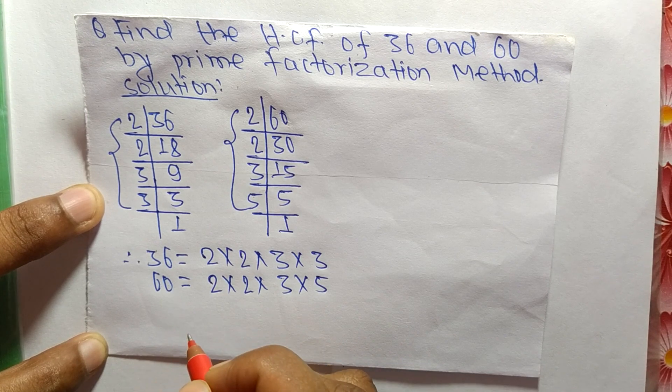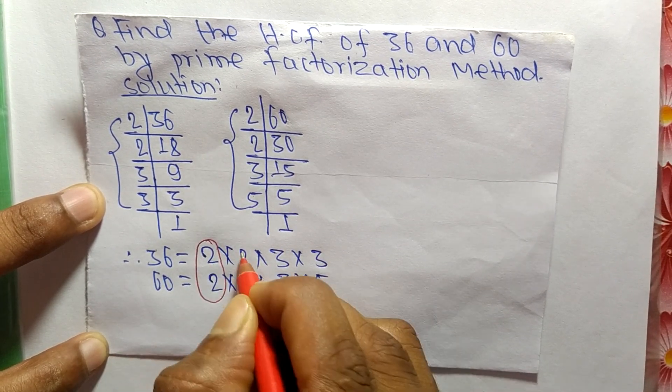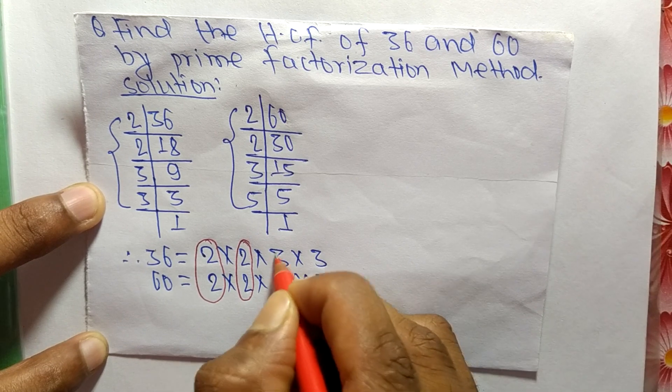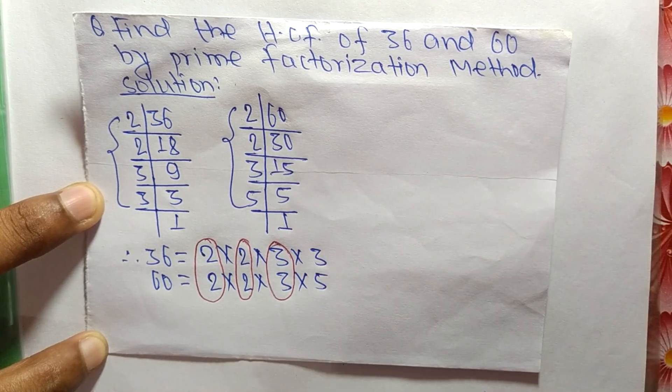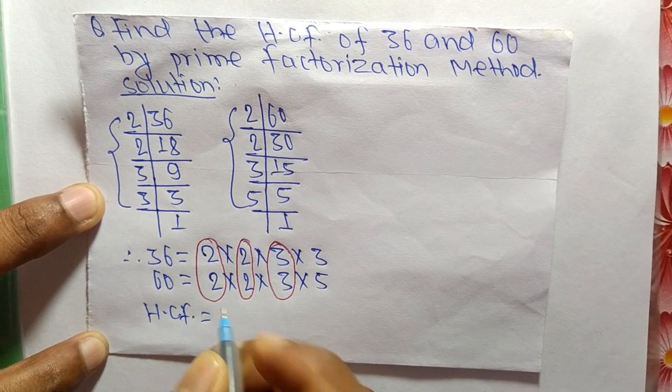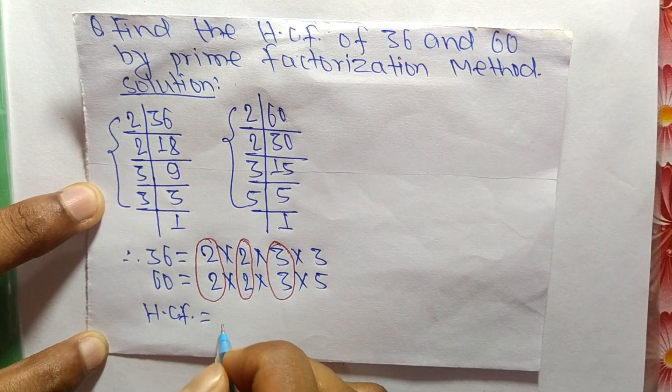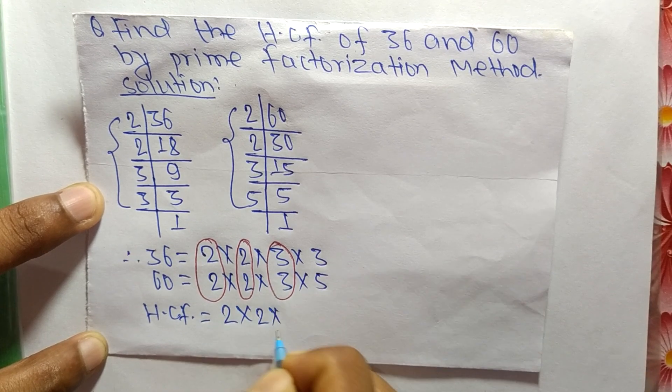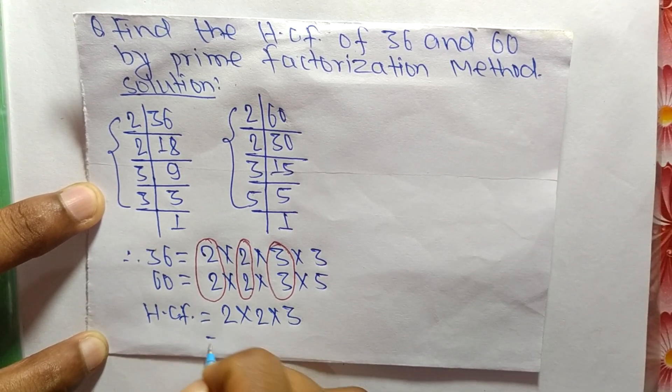The common factors here are 2, second 2, and third one 3. So now HCF is equal to the product of all these common factors, that is 2 times 2 times 3. So it is equal to...